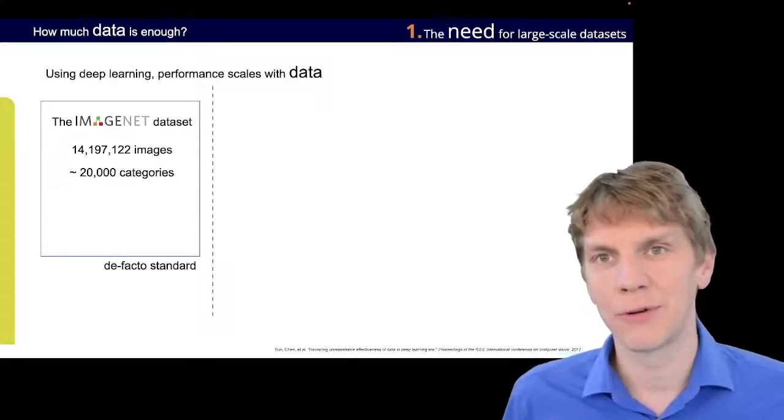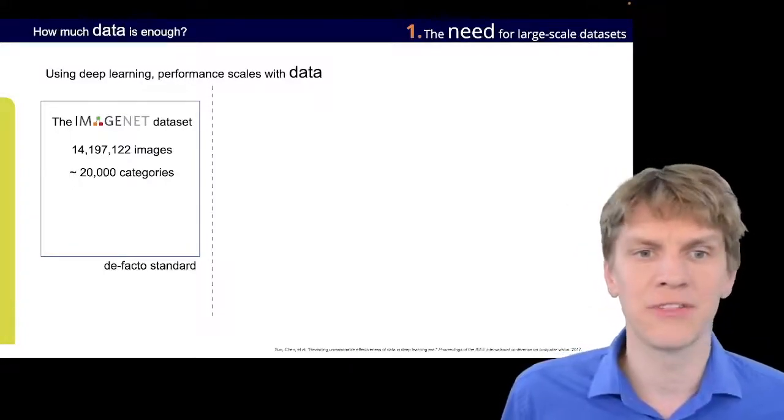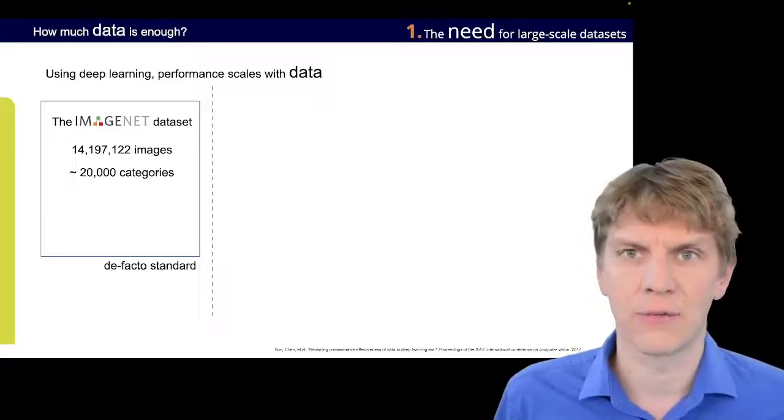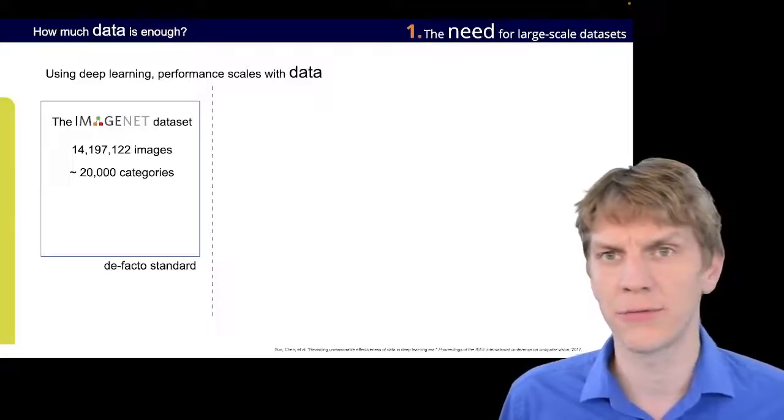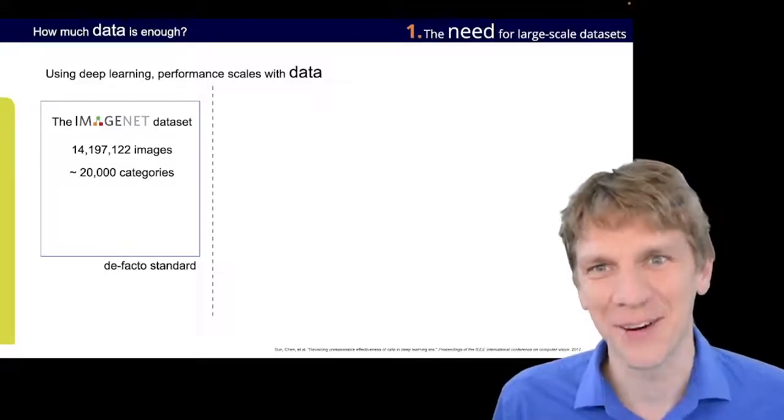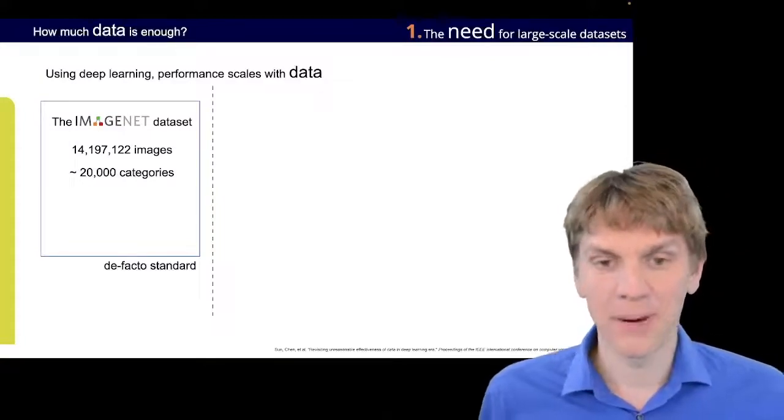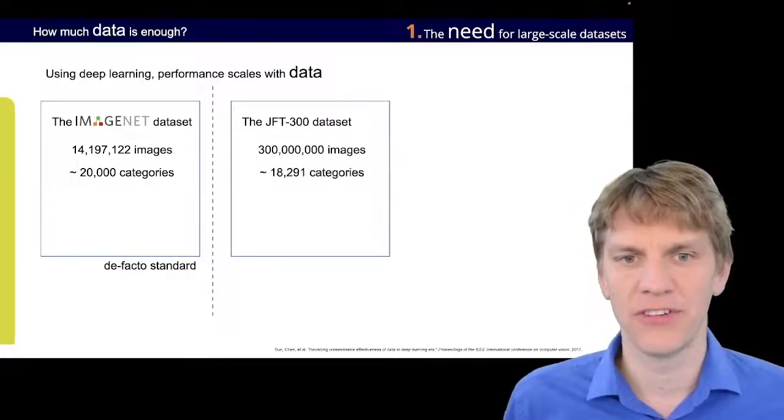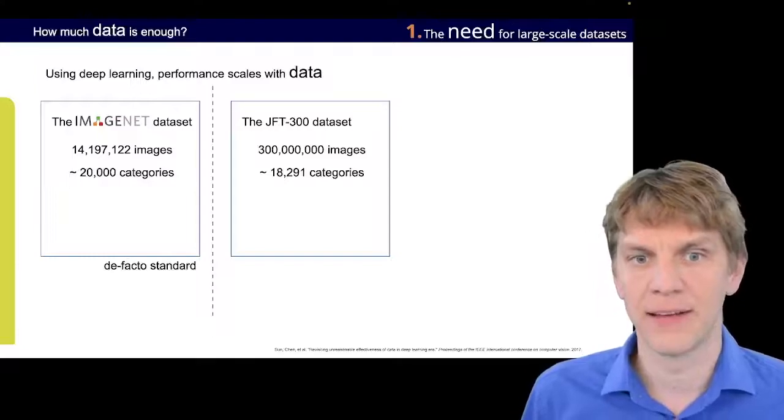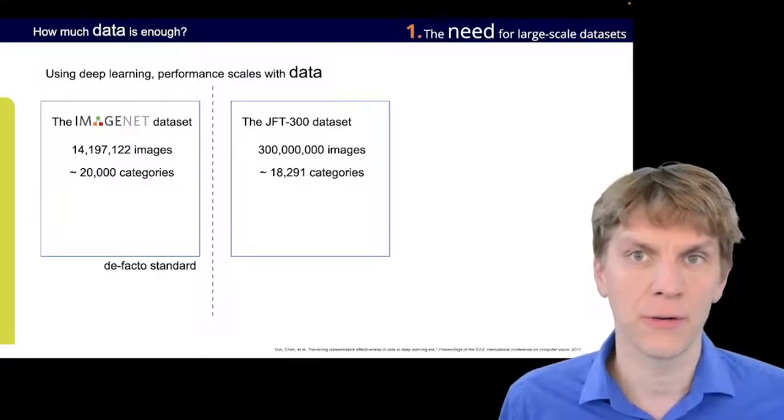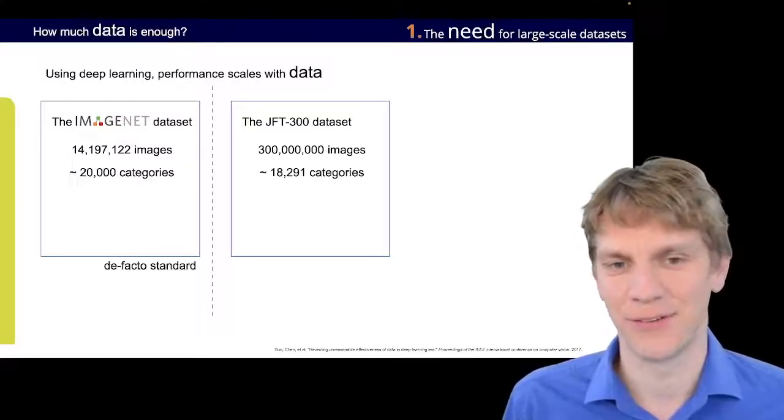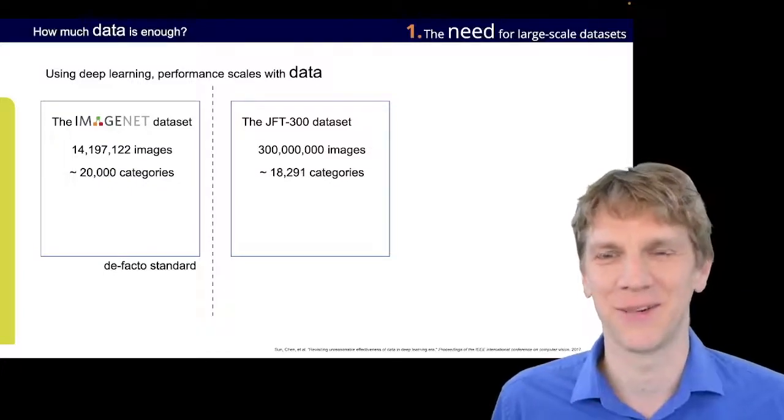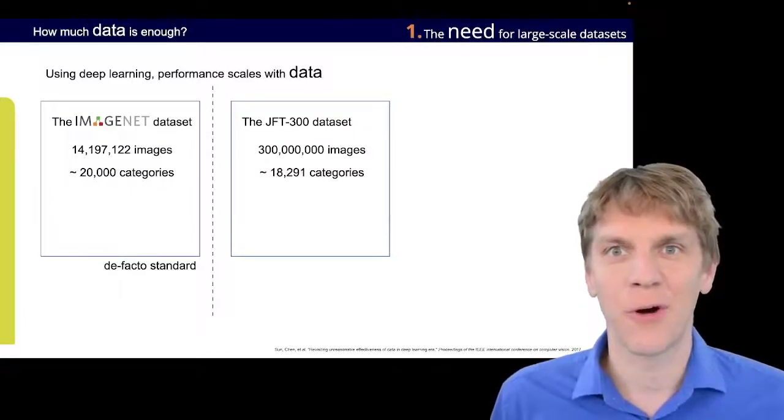And for that, maybe we have to look for someplace else. Because the ImageNet dataset, which is actually the de facto standard, the benchmark dataset, containing roughly 14.2 million images of 20,000 categories. But there's another dataset that is, unfortunately, not publicly available, which is the JFT-300 dataset from Google. And this dataset scales up and is featuring some 300 million data points or images of 18,000 categories. Now, that's, of course, a whole lot more.